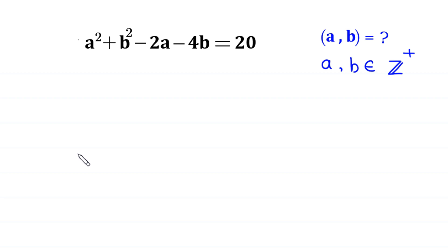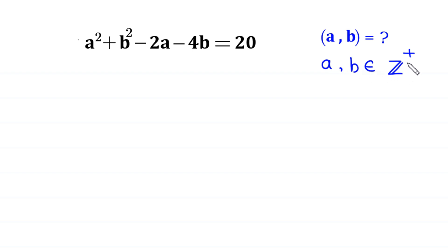Hello, welcome to how to solve this very nice Diophantine equation: a squared plus b squared minus 2a minus 4b is equal to 20. We need to find all possible values of a and b, where a and b are positive integers — meaning a is greater than 0 and b is greater than 0.